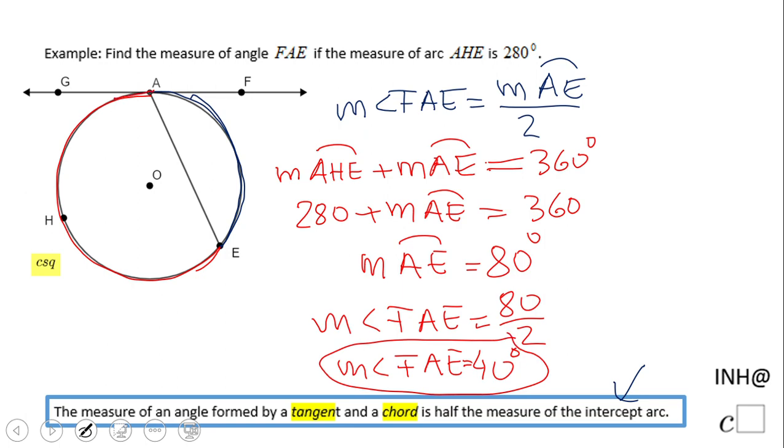By the way, this is not the only way. You may want to find the angle GAE, and then use the fact that these angles form a linear pair to get angle FAE. If you enjoyed this, don't forget to like and come back to I Need Help at C Squared for more help. Thank you.